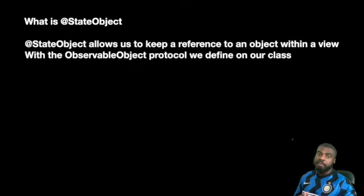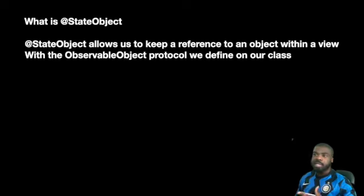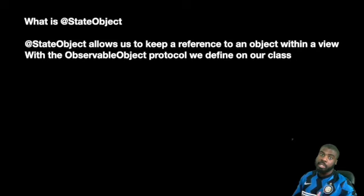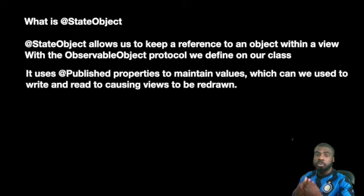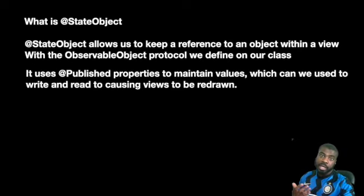So what is StateObject? Essentially, StateObject is a property wrapper that allows us to mark our objects which conform to ObservableObject and maintain a reference to those objects within our views. So for example, if you have a class or a view model with a bunch of properties that you want to use to manage the state of a view, StateObject is probably what you want to use within your SwiftUI view.